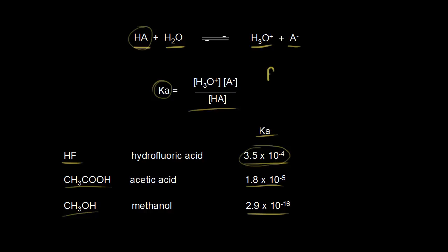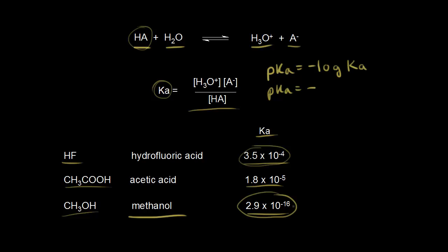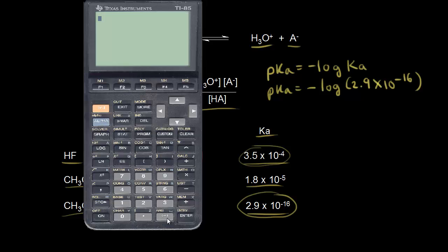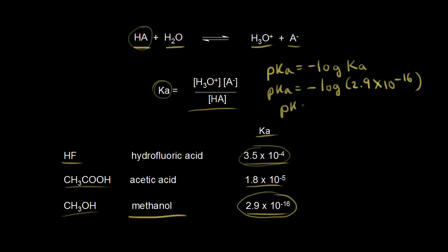So let's talk about pKa. The pKa is defined as the negative log of the Ka. So if we wanted to find the pKa for methanol, all we have to do is take the Ka and take the negative log of it. The pKa is equal to the negative log of 2.9×10⁻¹⁶. Using the calculator, the negative log of 2.9×10⁻¹⁶ gives us 15.54 when we round that.